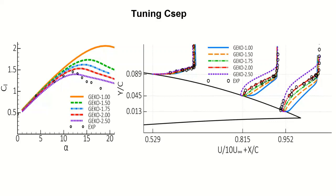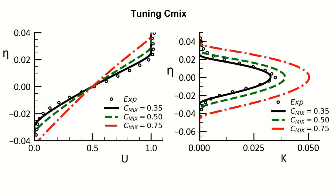Now we can hold CSEP and the other parameters constant to see how the value of CMix affects velocity and turbulent kinetic energy profiles. CMix equal to 0.35, again the default shown here in black, agrees with the experimental data very well. Increasing CMix leads to an increased spreading rate shown on the left and higher turbulence levels shown on the right.